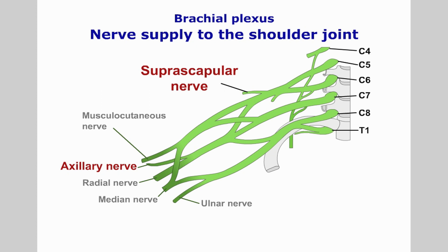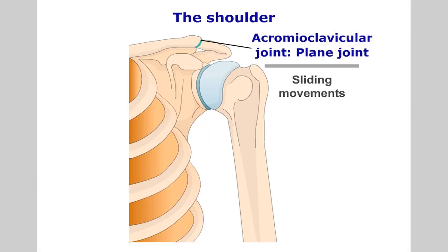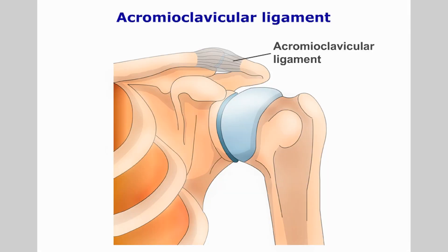The acromioclavicular joint is a synovial plane joint formed by the acromion of the scapula and the lateral aspect of the clavicle. It has a capsule, a synovial membrane and an intraarticular disc. It is reinforced by the superior and inferior acromioclavicular ligaments.